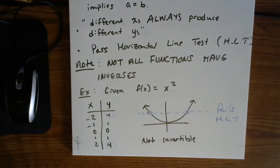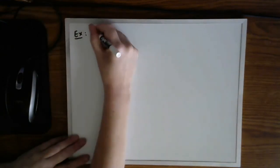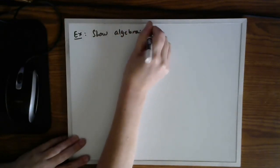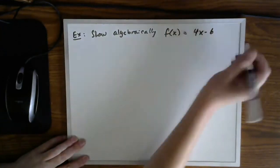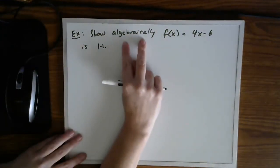So the dotted line is another way of saying that same information. So we can see which ones aren't one-to-one, but let's see if we can show when a function is one-to-one. So for my next example, let's show algebraically that the linear function 4x minus 6 is one-to-one.